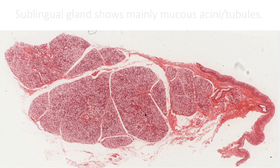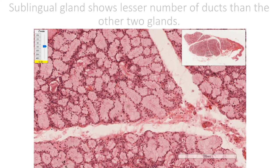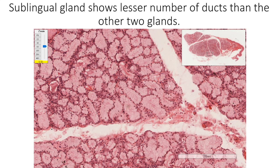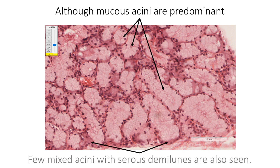The sublingual gland shows mainly mucous acini or tubules. Compared to the other two glands, the sublingual gland shows a lesser number of ducts. Although mucous acini are predominant, few mixed acini with serous demilunes are also seen.